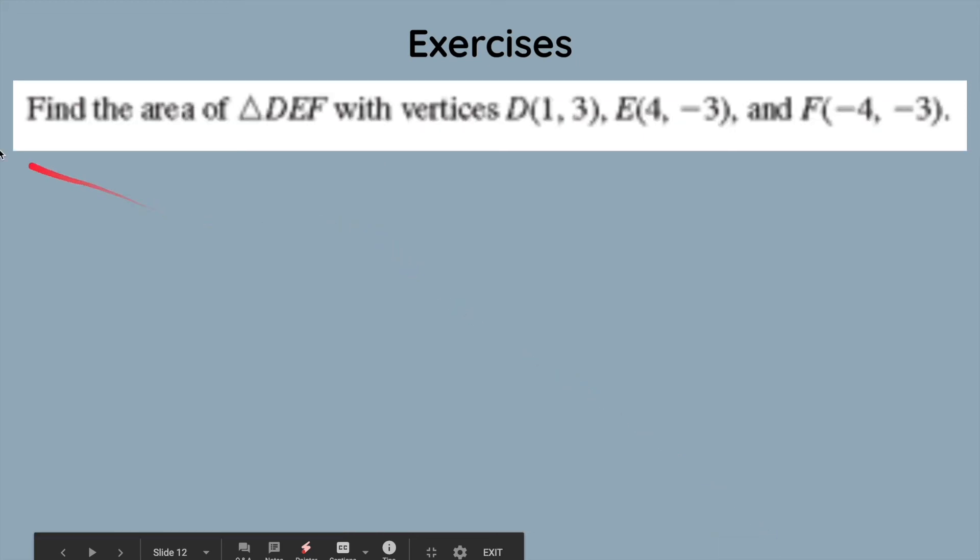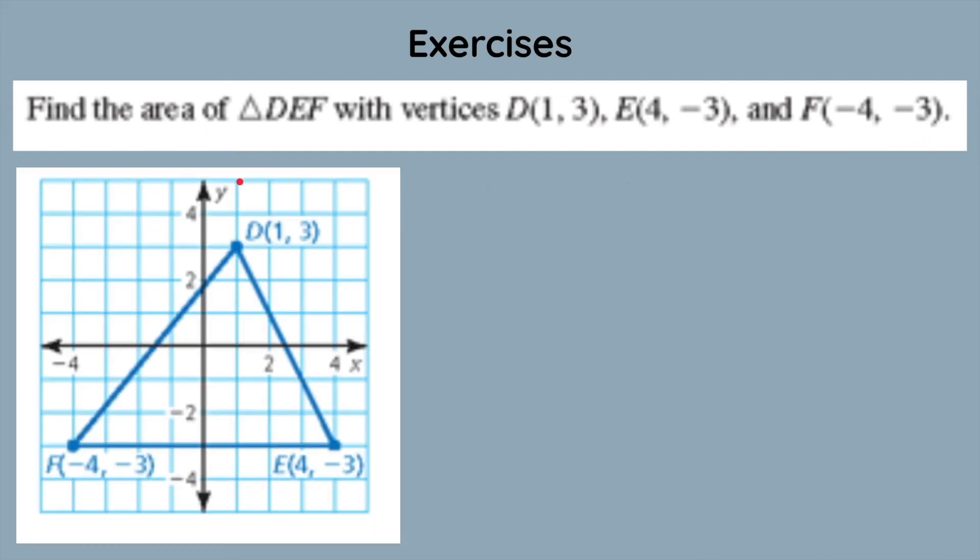Moving on to another exercise, find the area of triangle DEF with vertices D is 1, 3, E is 4, negative 3, and F is negative 4, negative 3. Again, let's just start off by plotting it on a coordinate plane, and remember that this problem is finding the area, whereas the last problem was finding the perimeter. We're going to still need to use the distance formula not to find the three side lengths, but rather to find the lengths of the base and height, so we can multiply them and then divide them by 2.